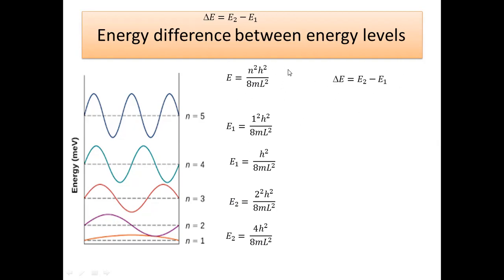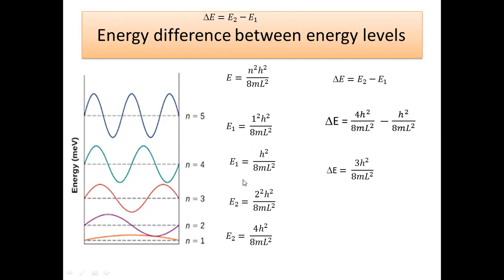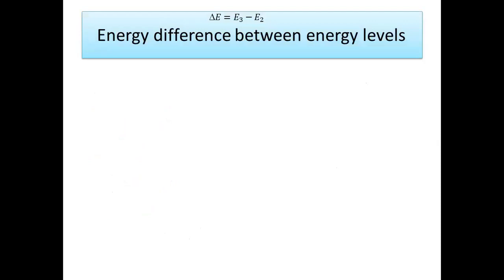You can calculate the energy of any level using this equation, and also calculate the energy difference between two levels. The formula is simple: take E2 minus E1. Substituting, E2 is 4h²/8mL² and E1 is h²/8mL². Taking h²/8mL² as the common factor, what remains is 4 minus 1, which equals 3. So the energy difference between level 2 and level 1 is 3h²/8mL².